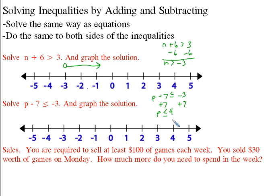Down here I've got 4 with a filled-in circle, because it's less than or equal to, and I draw my arrow this way. Let's check: 0 minus 7 is negative 7 — is that less than or equal to negative 3? Yes, it is. And 5 minus 7 is negative 2 — is negative 2 less than or equal to negative 3? No, it's not. So my arrow is pointing in the right direction.